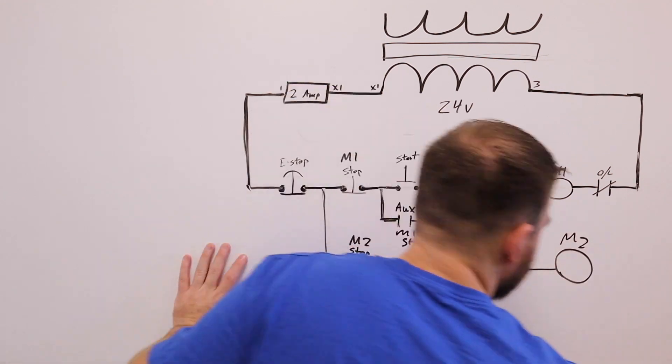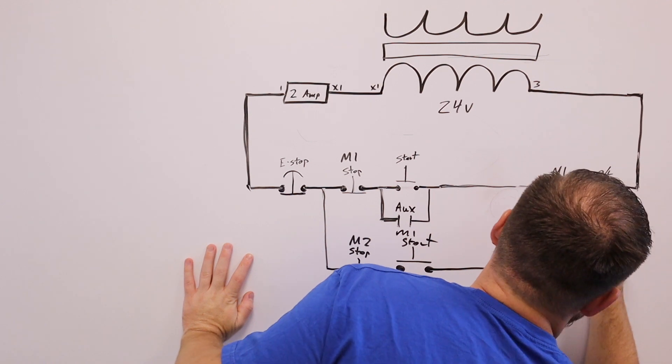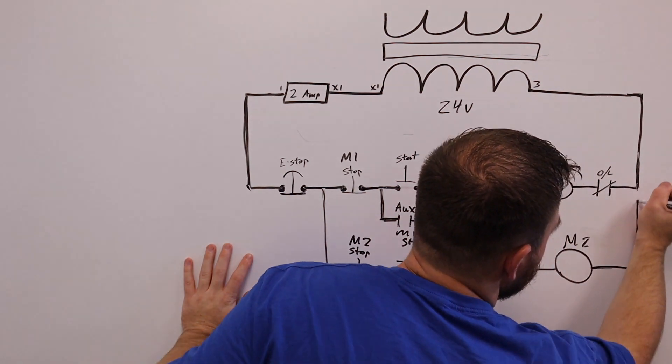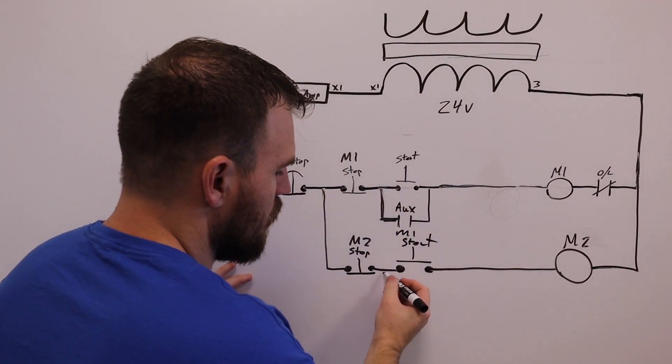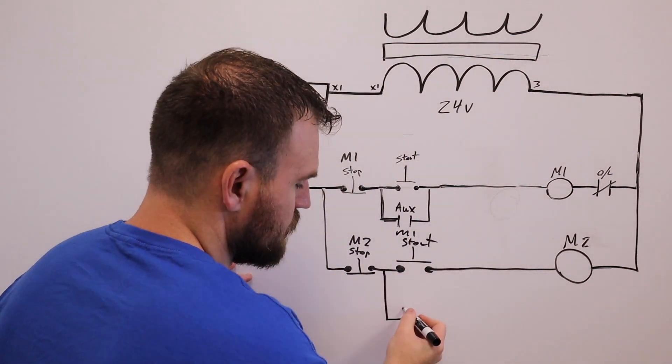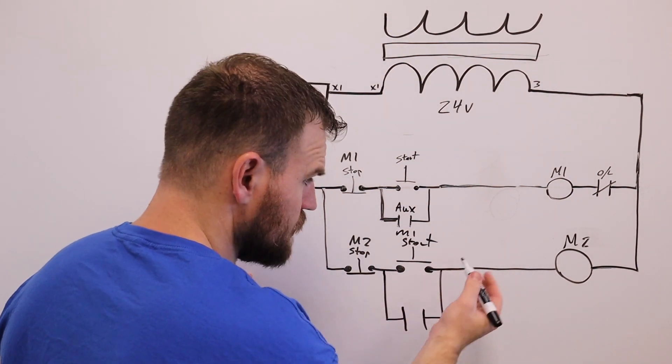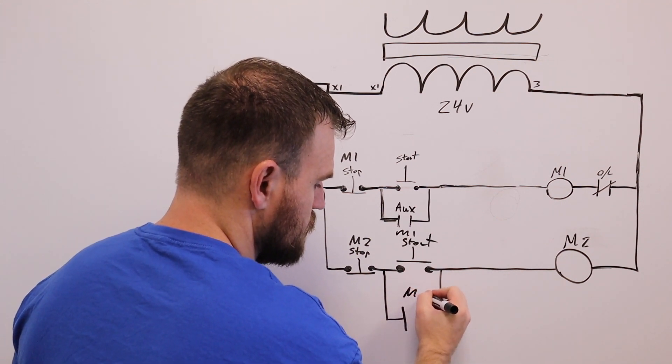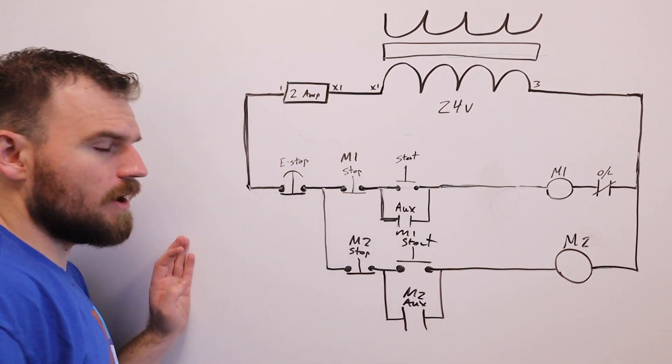Not very good at doing my drawing today. We'll do M2 going into - we're not going to have an overload for this one, so it's a little bit more simple. We are going to have our latching circuit, so it does have an auxiliary on the front of that motor coil. I'll show you that in a second. We'll do M2 aux.